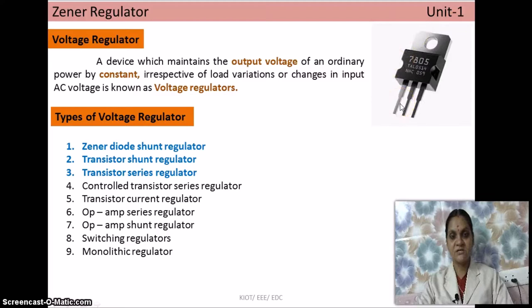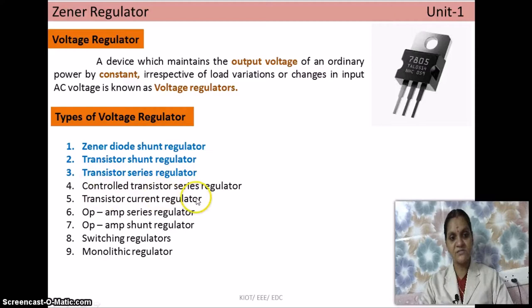You may have encountered this while purchasing a regulator from a shop — you get a specification sheet that describes the leads. The different types of voltage regulators are: zener diode shunt regulator, transistor shunt regulator, transistor series regulator, controlled transistor series regulator, transistor current regulator, op-amp series regulator, op-amp shunt regulator, switching regulators, and monolithic regulators.